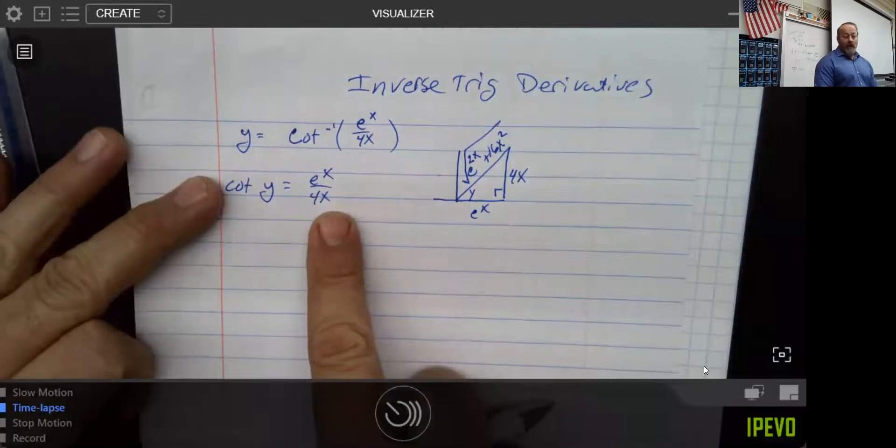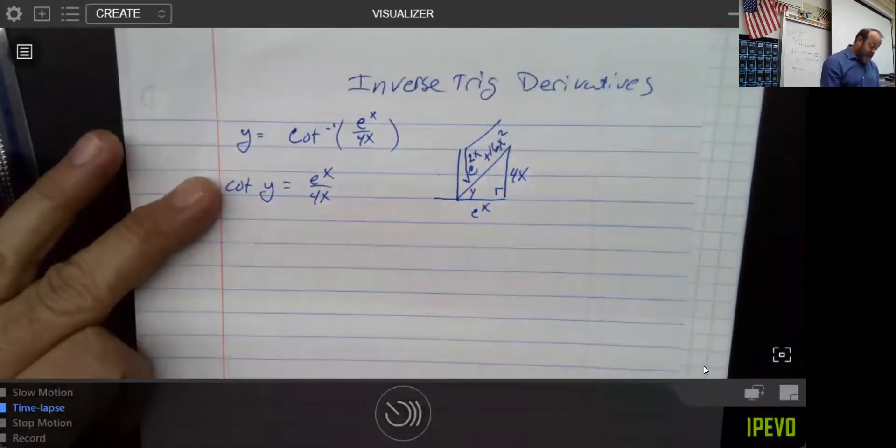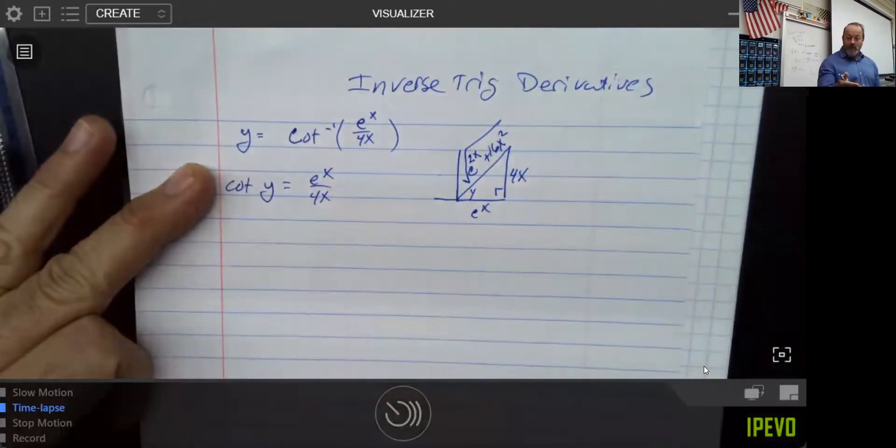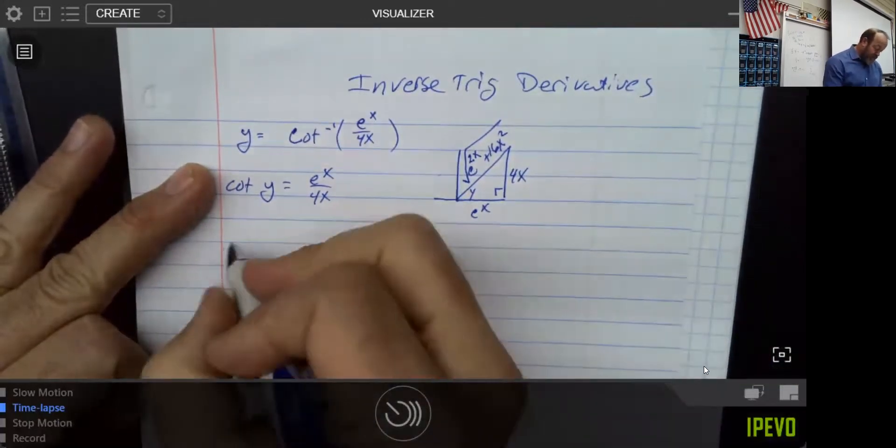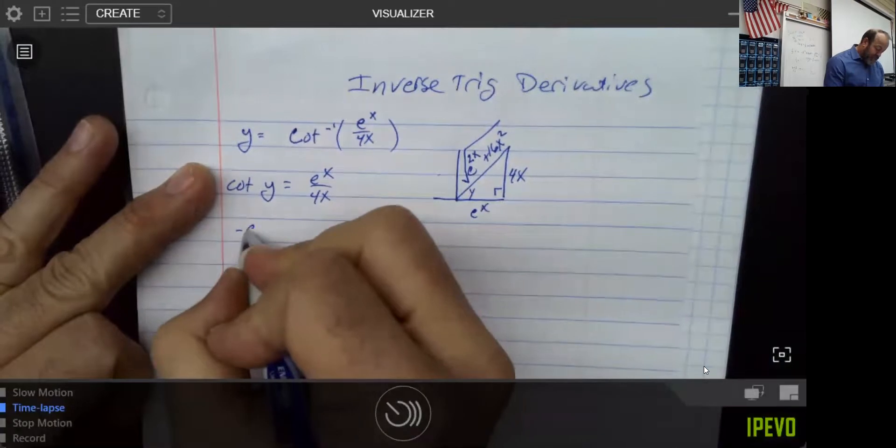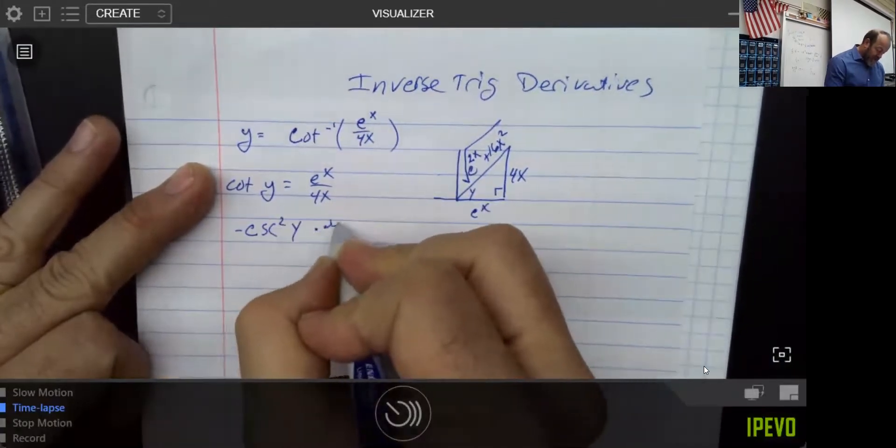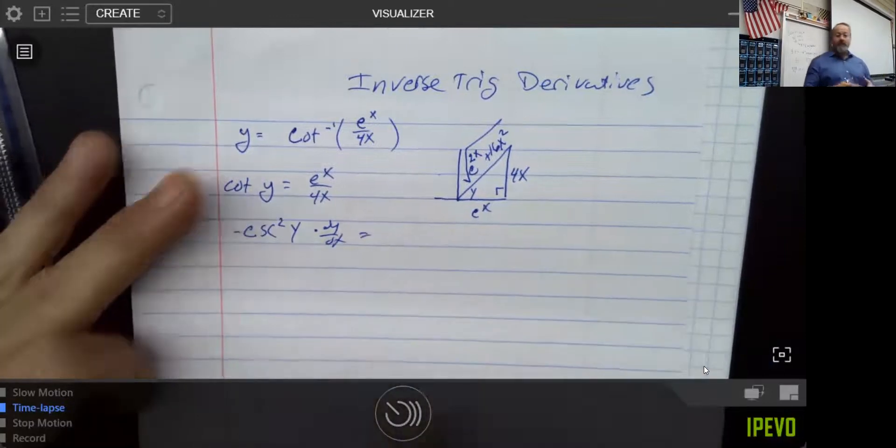We haven't done any calc yet, but now it's time to do that. Remember the derivative of a cotangent. The tangent was secant squared, so the cotangent is negative cosecant squared. So, the derivative of cotangent is negative cosecant squared of y times dy dx.